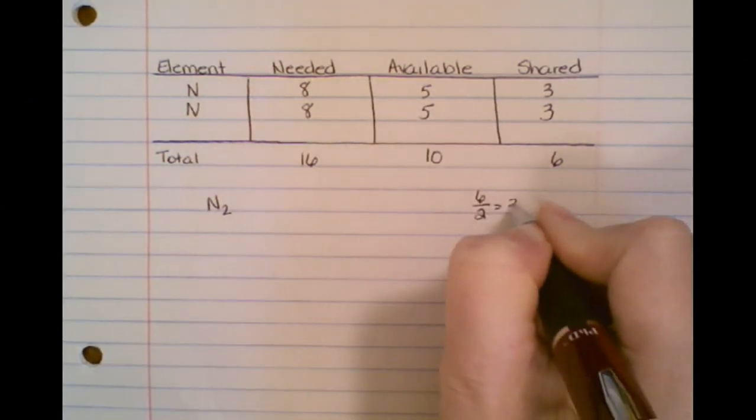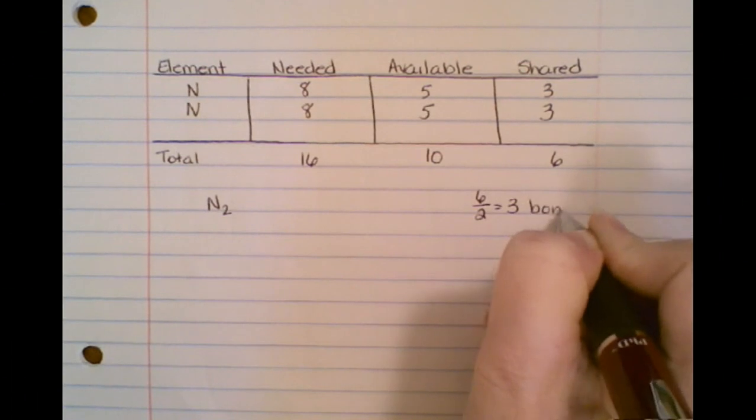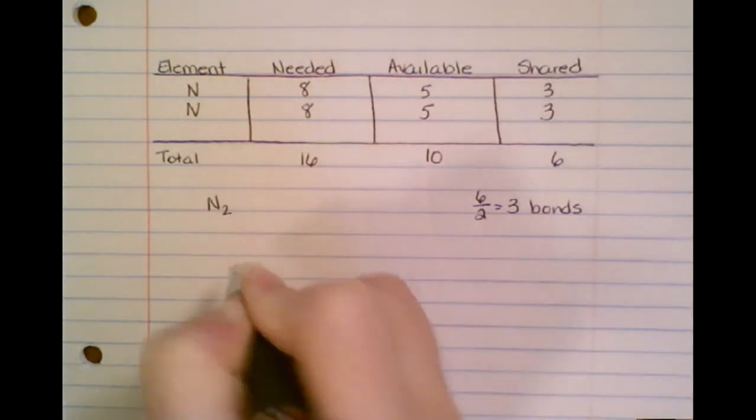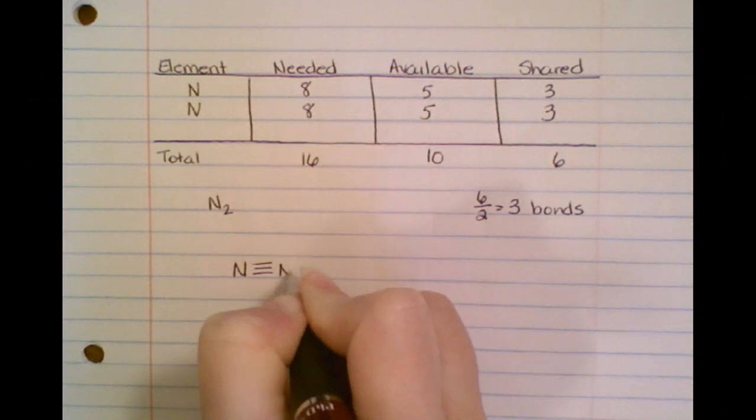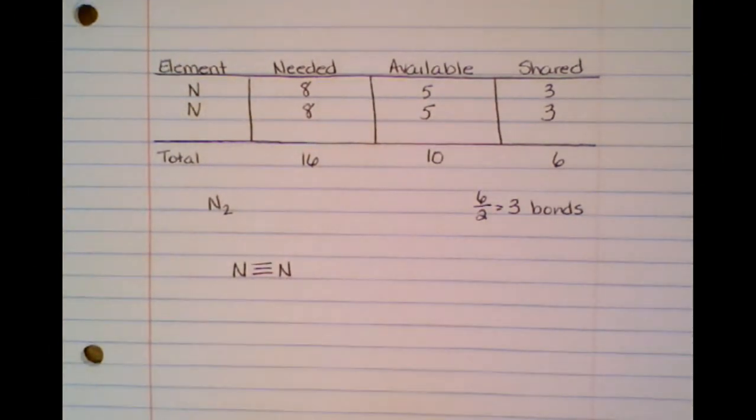I'm going to have six divided by two, and that will give me three bonds. So that means I've got an N—it says I've got three bonds—so it has to be connected to the other nitrogen because I don't have anything else to write a bond to.